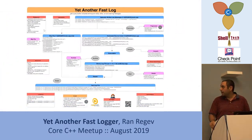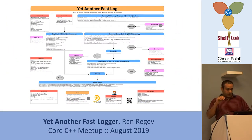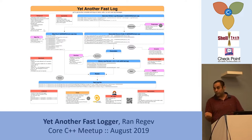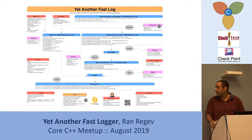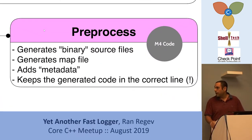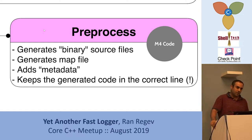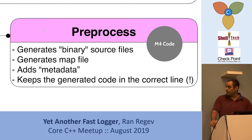The main technique here is to use preprocessing to make the code binary — to switch your strings, to switch everything into binaries, into longs. You just log everything as long. All your messages become longs, and then you have a binary file which is very fast to write.